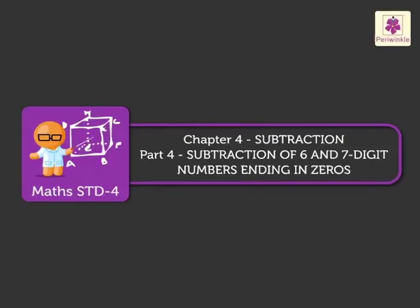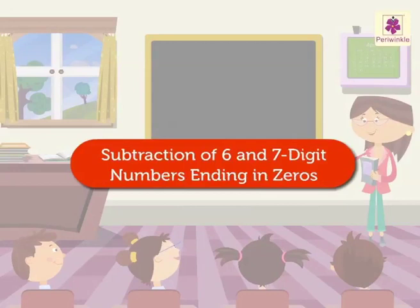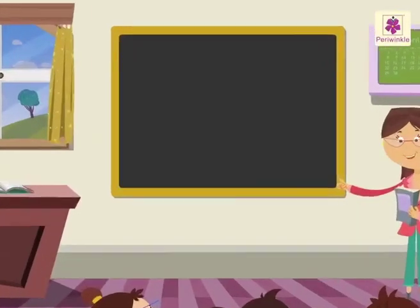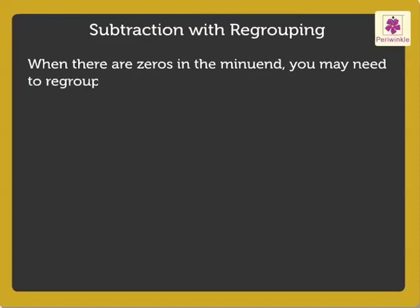Subtraction of 6 and 7-digit numbers ending in zeros. Let us learn subtraction of 6 and 7-digit numbers ending in zeros. Before we start, remember that when there are zeros in the minuend, you may need to regroup it more than once before you subtract.